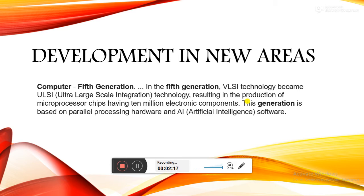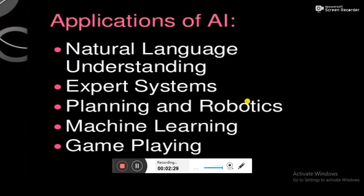The humanoid robot ASIMO, built by the company Honda in 2000, was an attempt to combine artificial intelligence and robotics. The applications of AI include natural language understanding, expert systems, planning, robotics, machine learning, and game playing.